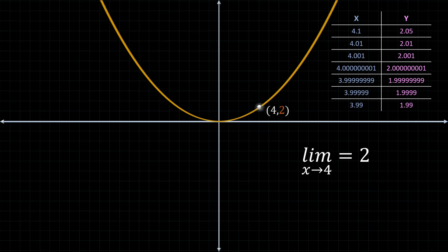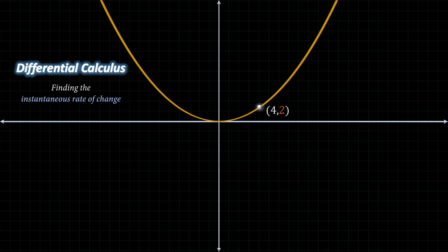That means as our x value gets infinitely closer to 4, the y value gets infinitely closer to 2. But we don't really even know if there is a point at (4, 2) — it's purely based on the pattern. So how does differential calculus exploit this concept of limits in trying to find the slope at a particular point on this curve?